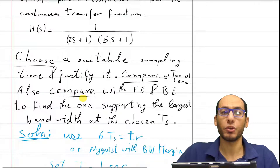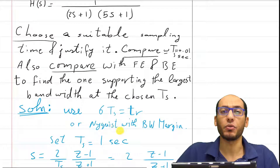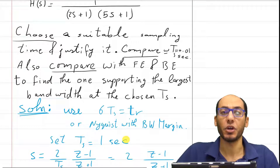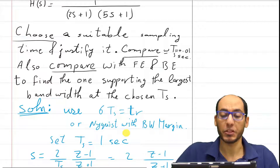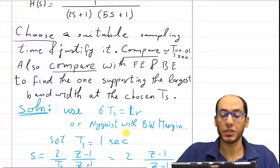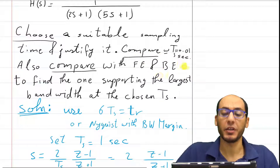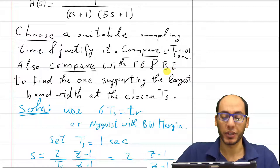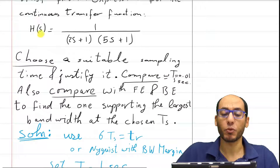I'm going to continue based on that. Let's assume that you know why Ts equals 1 second is a good justification of the sampling time for the Tustin model. The same justification is valid for forward and backward Euler and is explained in the video in the description. So let's continue and solve this problem.